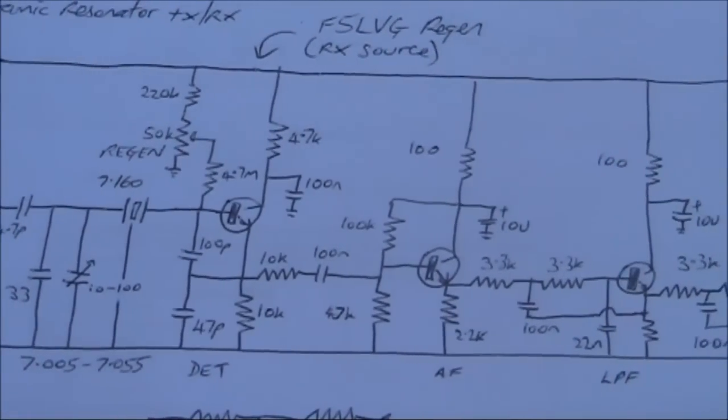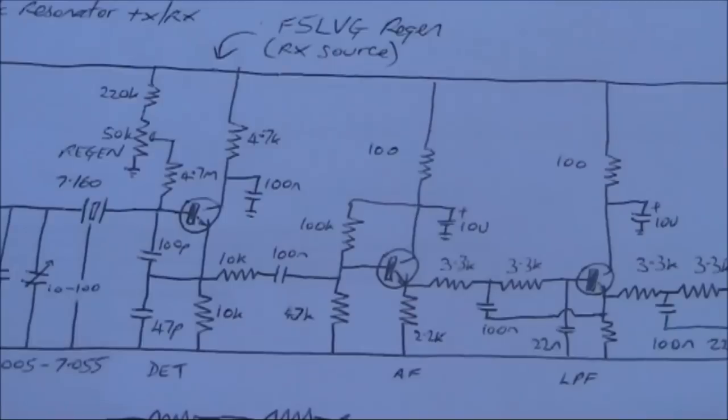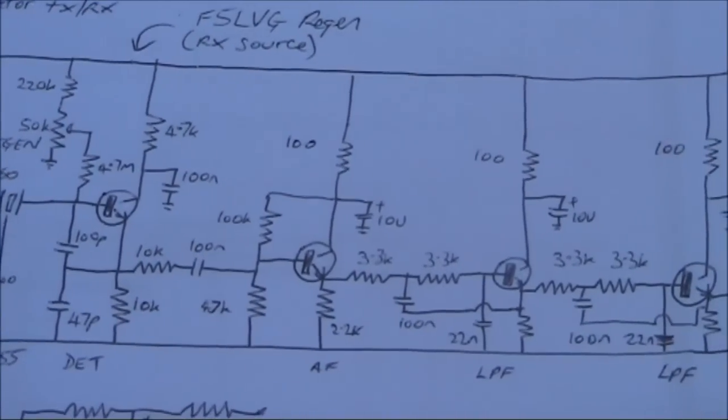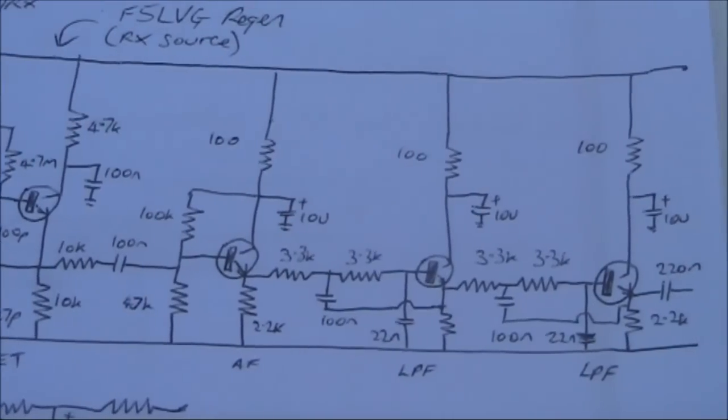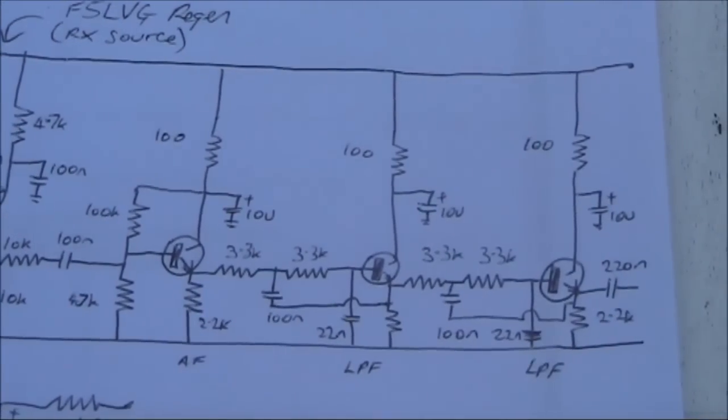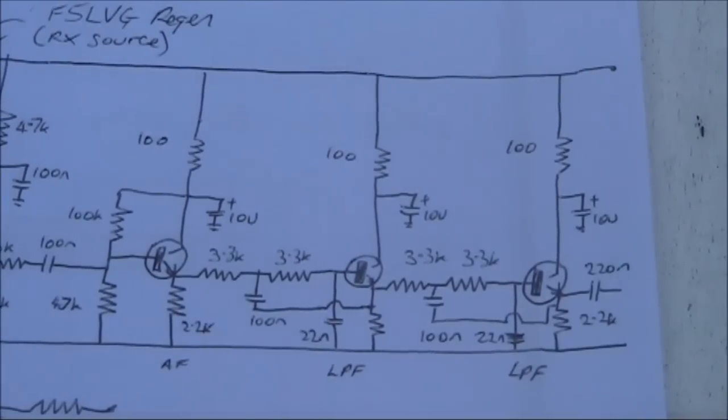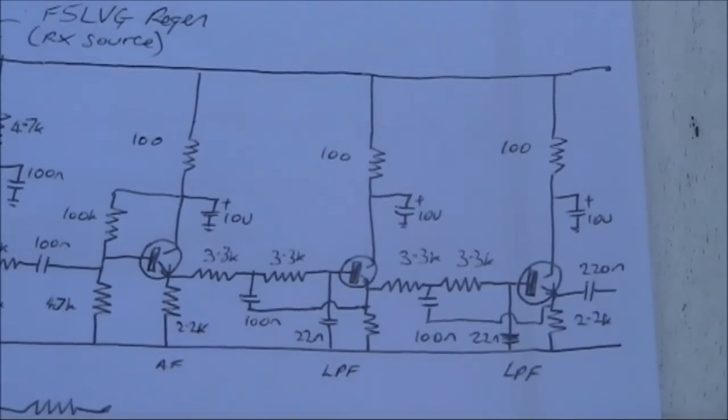Moving along to the right, an audio preamp uses an NPN transistor, a BC548 or 2N2222 or similar. And that proceeds to audio filter stages.